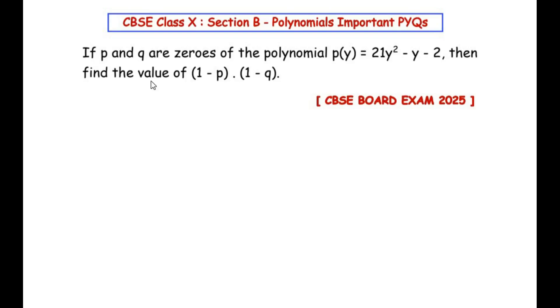Hello and welcome to my channel. In this video we are going to solve a section B question from the polynomials chapter. If p and q are zeros of the polynomial p(y) = 21y² - y - 2, then find the value of (1 - p)(1 - q).